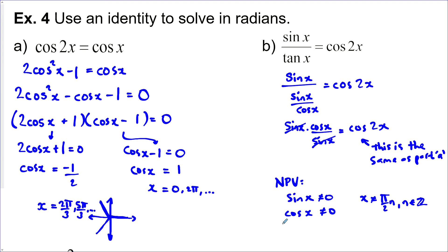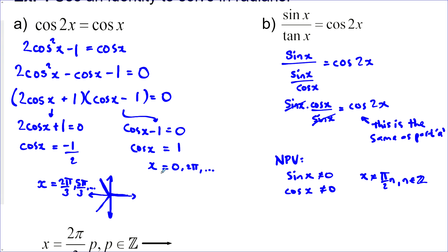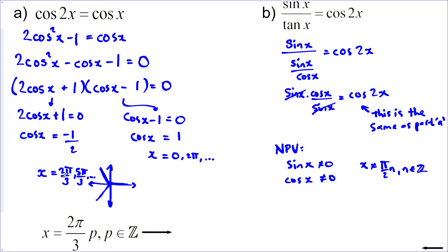Now that cuts out these solutions right here. So in this part we only have the 2 pi over 3 and the 5 pi over 3 and all their terminal angles. So for this side we've got to watch out for the non-permissible values. It takes away some of our solutions and since we only have these two solutions now.